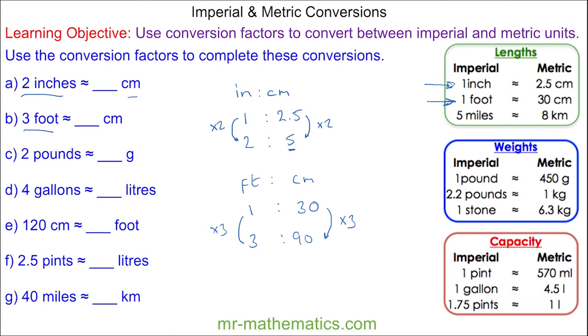And we'll do question C, between pounds and grams, which is this conversion here. So you can see 1 pound is the same as 450 grams. And because we want 2 pounds, we'll multiply both sides by 2, so we'll get 900 grams.